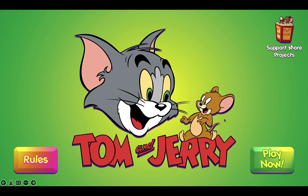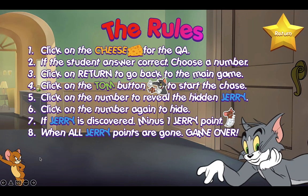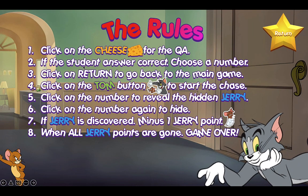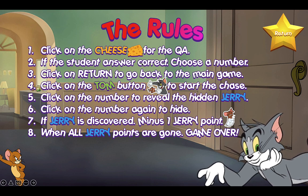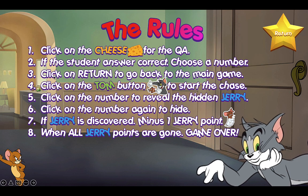We have some buttons here on our main screen — the Rules button and the Play Now button, and up here we have the Support More Projects button too. So let's click on the Rules. Here we have the rules: first, click on the cheese for the Q&A. Then if the students answer correctly, they can choose a number to hide Jerry. Click on Return to go back to the main game.